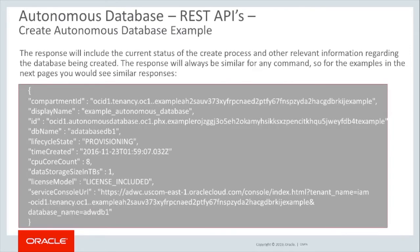The response to an Autonomous Database API command — in this case a create command — will include the current status of the create process and other relevant information regarding the database being created. In this example, we see the database parameters such as the compartment or tenancy of the database, the database display name, the name of the Oracle database, the current status, the time the creation process started, the number of CPUs allocated, the number of terabytes of storage allocated, the license model being used, and the direct link to the database console.